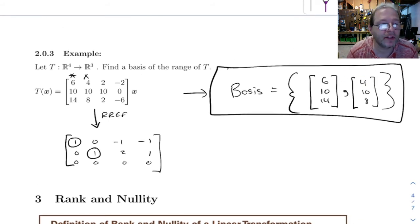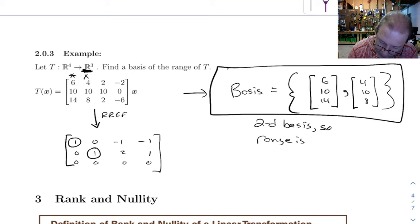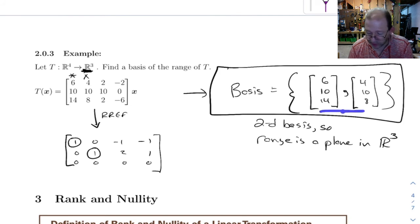So this basis here is two dimensional. So what this means is our range is actually just a plane in R3. Which plane is it? Well, the easiest way to describe it is by giving you these two basis vectors. You can get any point in the plane by taking linear combinations of those.